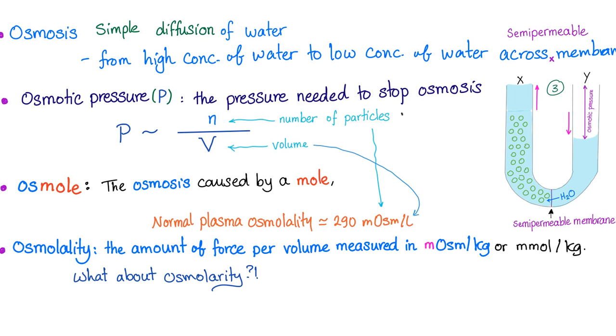Let's say you have lots of sodium, lots of sodium, lots of sodium. What's going to happen to osmosis or osmotic pressure? It's going to go up. Think of volume. It's inversely related to volume. The higher the volume, the less the osmotic pressure. Because when you have a higher volume, the sodium is relatively diluted. Got it? Again, osmol. Osmosis caused by a mole. Normal plasma osmolality is 290 milliosmol per liter.